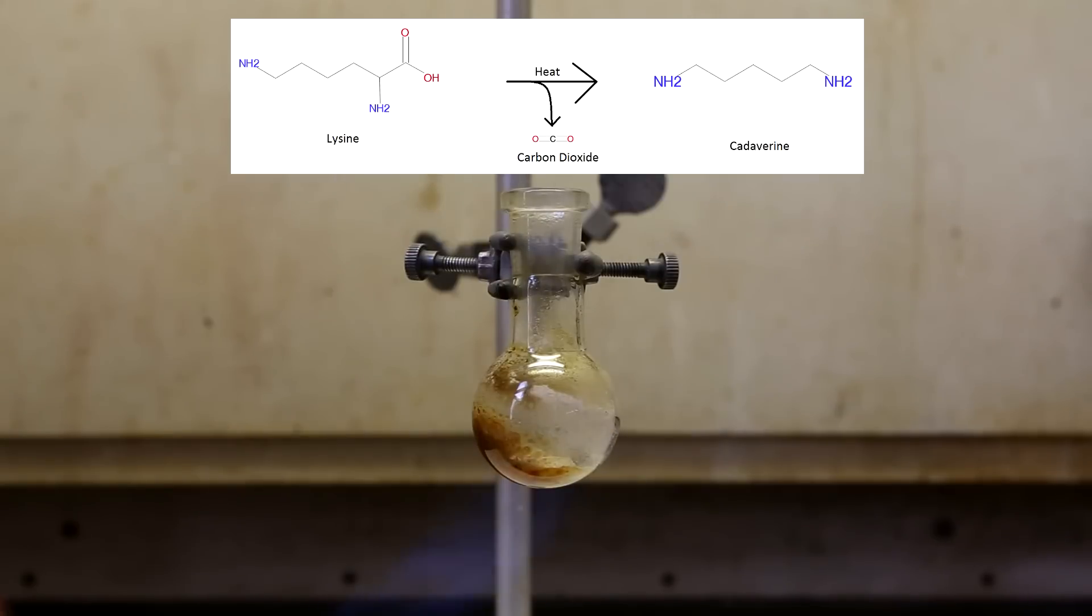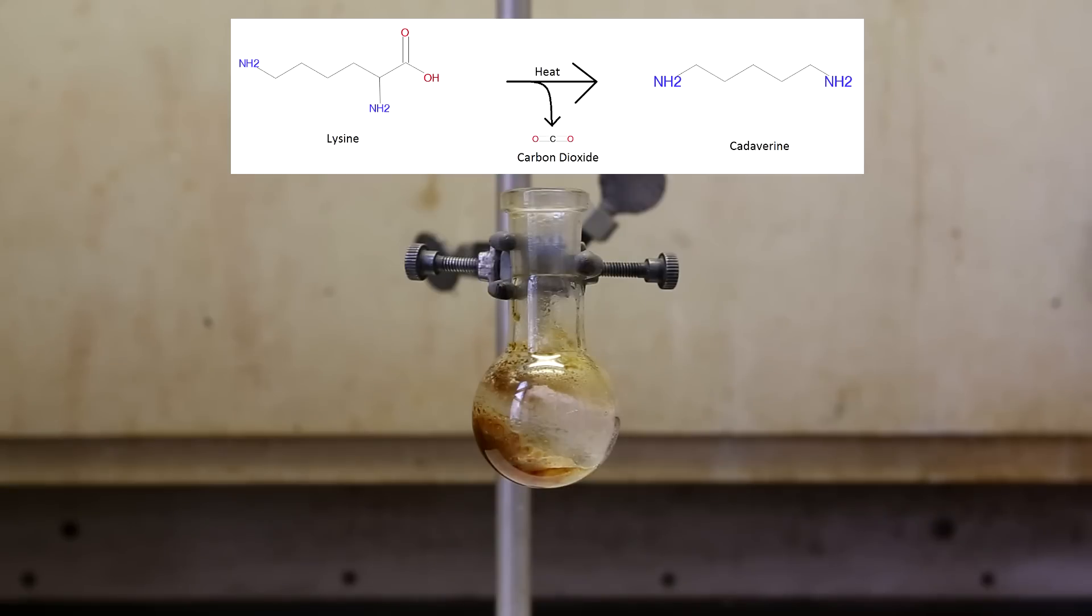Because the decarboxylation reaction results in the loss of one carbon atom, this reaction can be used to shorten a carbon chain. Once the carboxylic acid group is kicked off, we are left with a very simple diamine called cadaverine. While the lysine is a white powder, the cadaverine is an oil.